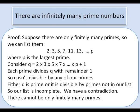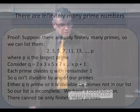So our list was incomplete, and we have a contradiction, and the only way to resolve that contradiction is to note that we couldn't, in fact, list all the prime numbers to begin with. So we've shown there must be infinitely many prime numbers.